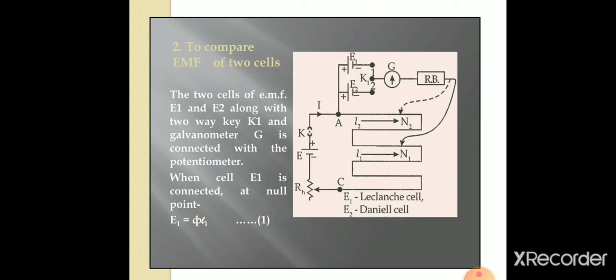Let us now discuss how to compare the EMF of two cells using potentiometer. The two cells of EMF E1 and E2 along with a two-way key K1 and galvanometer G is connected with a potentiometer. When cell E1 is connected, at the null point E1 will be proportional to the balancing length L1, or else we can write E1 is equivalent to φ into L1, where φ is known as the potential gradient.